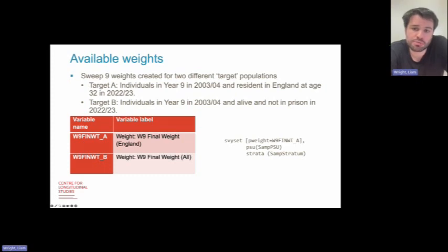The first reflect the initial population who are alive, not in prison, and remaining resident in England in 2022-23. The second target population reflects the initial population who are also alive and not in prison in 2022-23. Researchers using these weights should consider what the population they want to reflect is. In some cases, creating your own bespoke weights may be necessary.